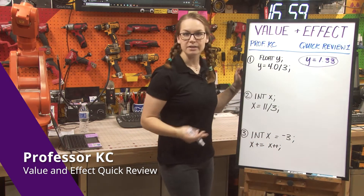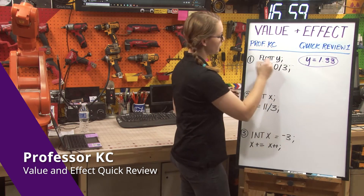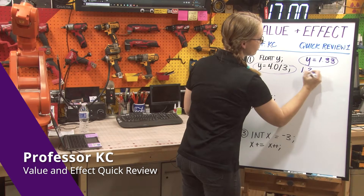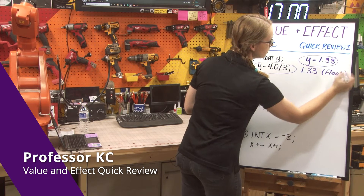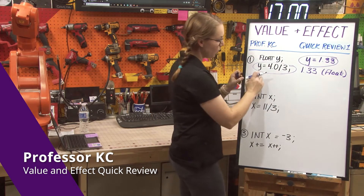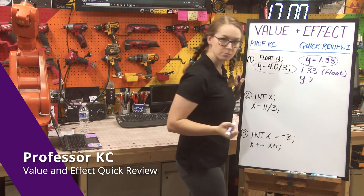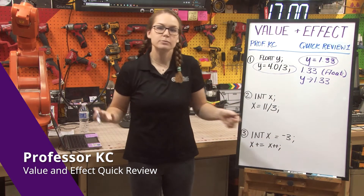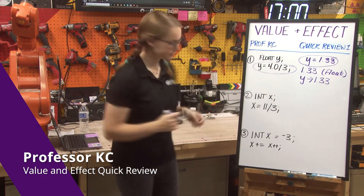That means that the value of the entire line is going to be 1.33, and we know that's a float. And the effect of the line is that y becomes 1.33. So that was a fairly simple one. Let's look at the next one.